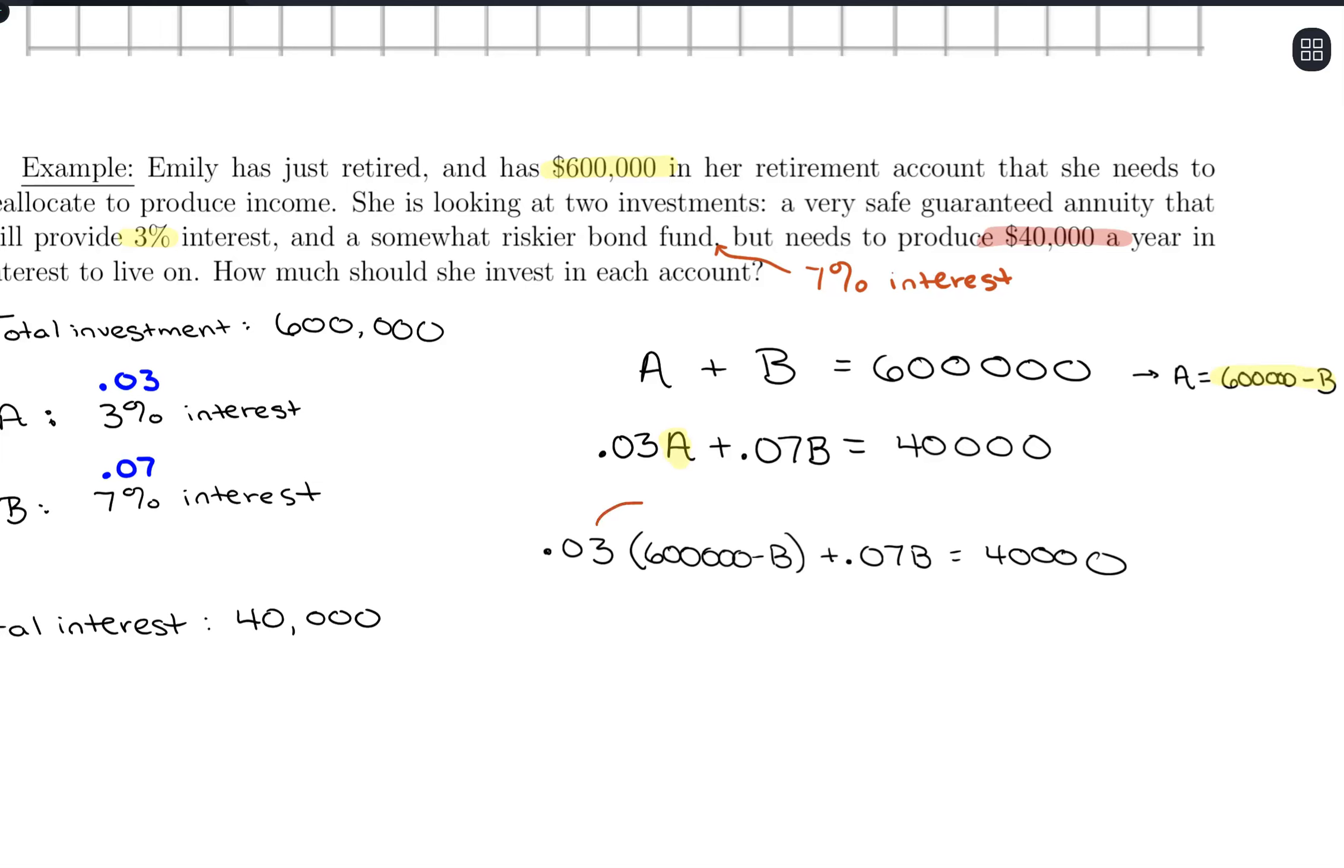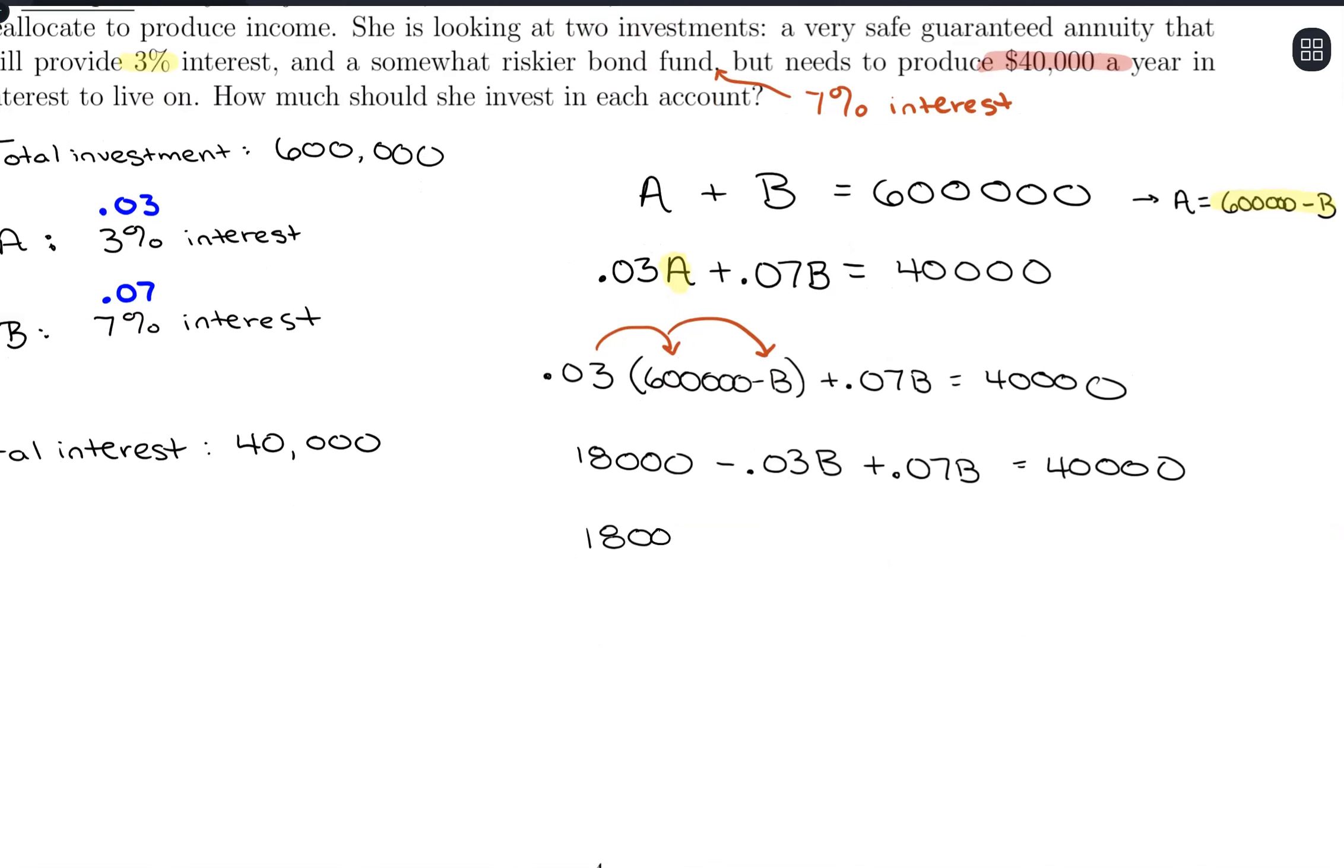We're going to distribute that 0.03 into our expression there. So 0.03 times 600,000 is 18,000. And then 0.03 times a negative B is minus 0.03B. And then we have the plus 0.07B equals 40,000. Okay, combining like terms, 18,000, so negative 0.03 plus 0.07 is a positive 0.04B equals 40,000. Subtract 18,000 from both sides to get 22,000.